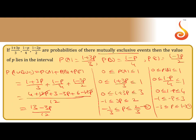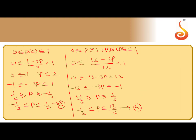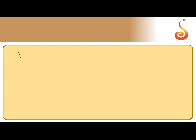So the four inequalities are: (1) −1/3 ≤ p ≤ 2/3, (2) −3 ≤ p ≤ 1, (3) −1/2 ≤ p ≤ 1/2, and (4) 1/3 ≤ p ≤ 13/3.